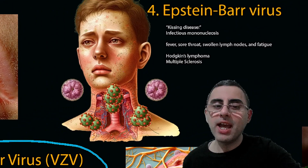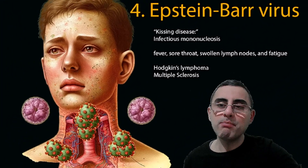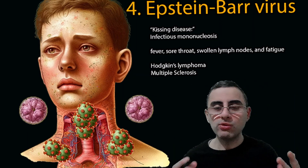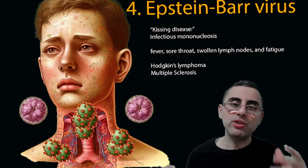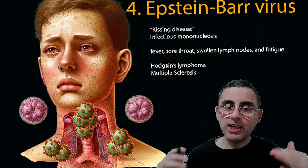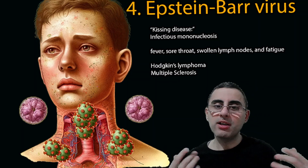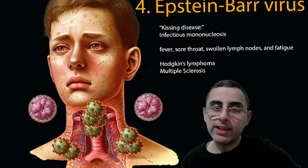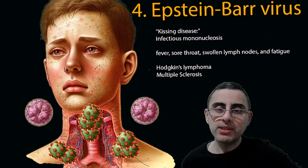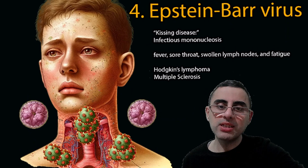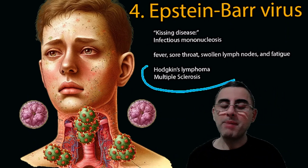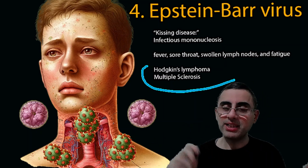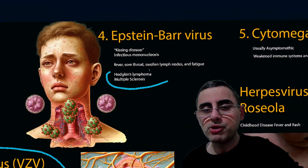The fourth type is Epstein-Barr virus, which causes infectious mononucleosis. Infectious mononucleosis is also called the kissing disease because it spreads via kissing and saliva. It causes fever, sore throat, fatigue, swollen lymph nodes, and sometimes an enlarged spleen. Epstein-Barr virus is sometimes associated with an increased risk of Hodgkin's lymphoma and multiple sclerosis.